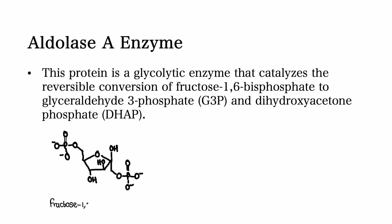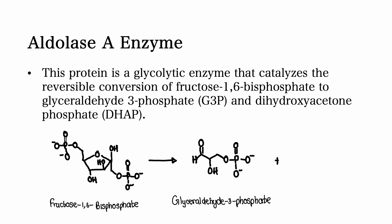Let's take aldolase A as an example. Aldolase A is a glycolytic enzyme that catalyzes the reversible conversion of fructose 1,6-bisphosphate to glyceraldehyde-3-phosphate and dihydroxyacetone phosphate. Make sure that you know that fructose 1,6-bisphosphate can also be written as fructose 1,6-diphosphate.